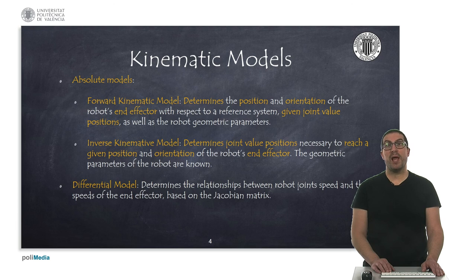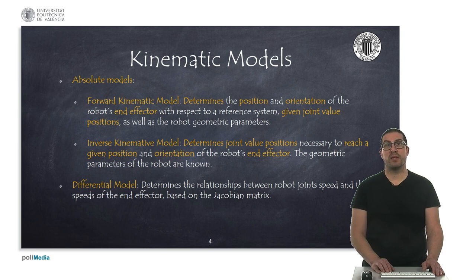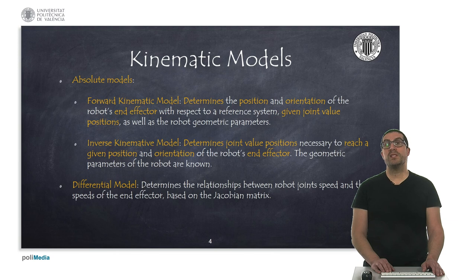A forward kinematic model allows to determine the position and orientation of the end effector from joint position values. An inverse kinematic model allows to obtain joint values that we need to apply in order to reach a given position and orientation of the end effector. Differential models allow to obtain a locally linear expression in terms of velocities. The Jacobian matrix is actually derived from the forward kinematic model.